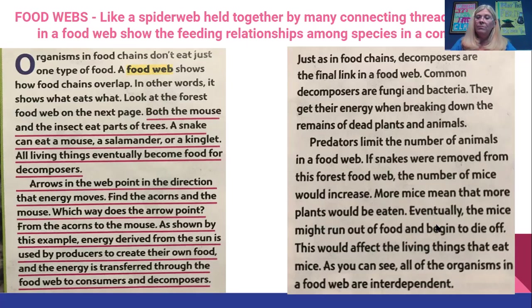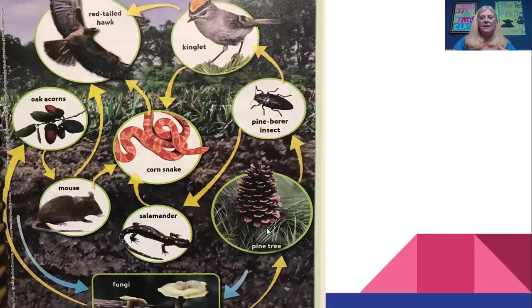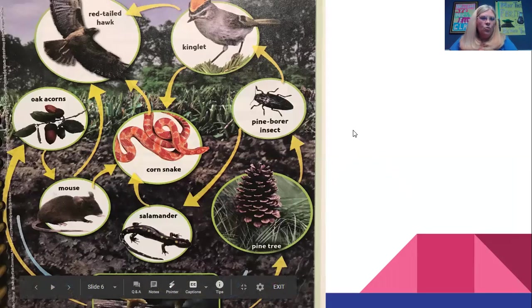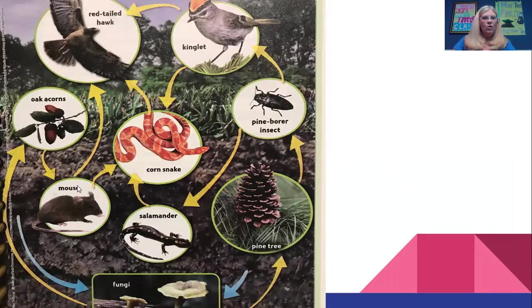Predators limit the number of animals in a food web. If snakes are removed from a forest food web, the number of mice would increase. More mice mean that more plants would be eaten. Eventually the mice might run out of food and begin to die off, and that would affect all the living things that eat mice. You can see that all organisms in a food web are interdependent — they need one another. Here is that picture we were talking about, finding the mouse and the acorn and seeing how these all interconnect. They don't just go in a straight line; they connect out in different ways — that's why it's called a food web.